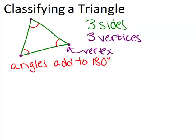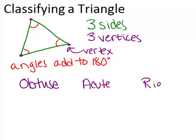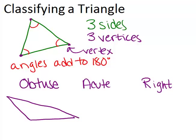Now we can classify triangles based on its sides and also based on its angles. Let's talk about classifying a triangle based on its angles. There are three possible classifications: you can have an obtuse triangle, an acute triangle, and a right triangle. Every triangle will be one of these three angle classification types. An obtuse triangle is a triangle with one obtuse angle — it would be impossible to have more than one obtuse angle. So this would be an example of an obtuse triangle, because it has one obtuse angle. I can tell that that angle is obtuse because it looks to be bigger than a right angle.